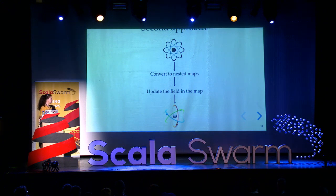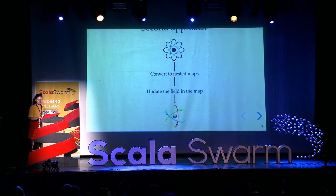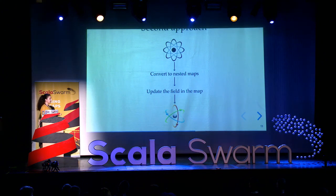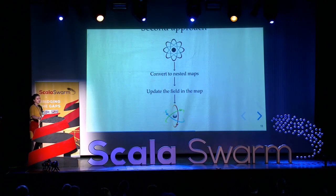We weren't ready to give up on Shapeless yet, so we started Googling and researching. We found a Stack Overflow question about converting nested case classes to nested maps, which was really interesting, and we started wondering if that would help us solve our problem. The top response was written by Travis Brown — you've probably heard of him — and it looked very complicated at first, and it took us a while to fully understand it. But then we figured out that maybe it's a good idea to take our Atom case class, do some magic and convert it to a nested Map from String to Any, then write a recursive function to find the field we want to update, make the change, and then add some more logic to put it back into a case class. That sounded very exciting, because you don't really get to do something like that in your day-to-day job.